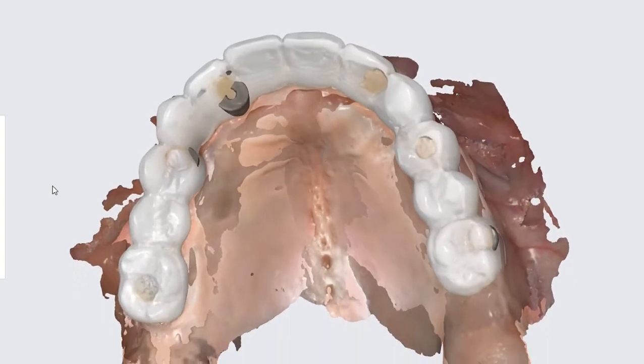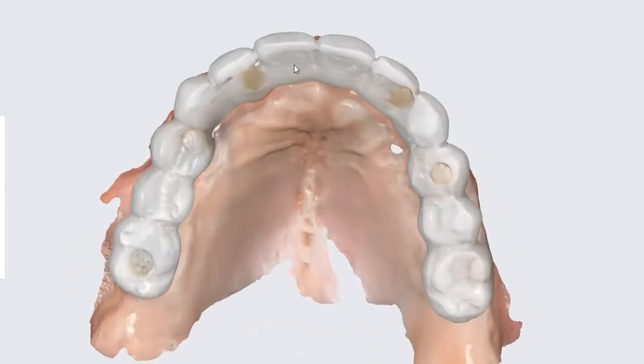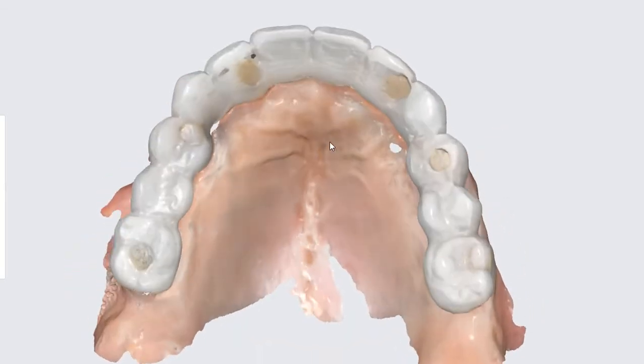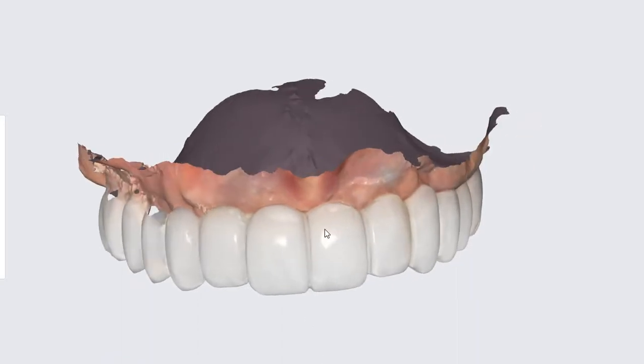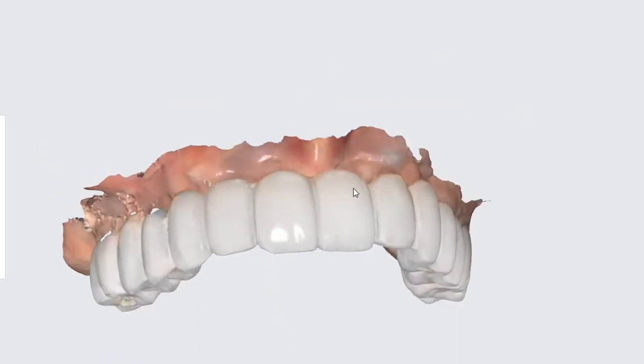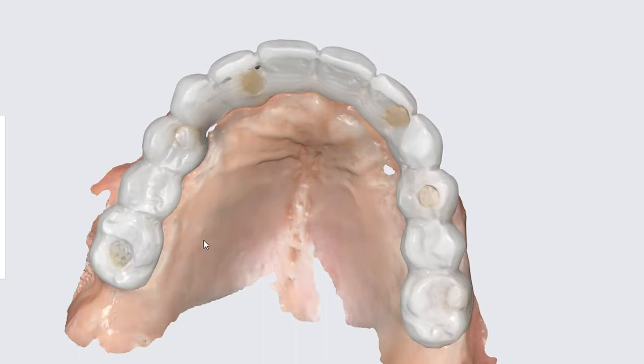This is her preoperative scan with all the aesthetic changes to the incisal edge, the CEJ, whatever else I need or don't like. Then I will remove the provisionals and scan the soft tissue of the palate with the provisionals out.